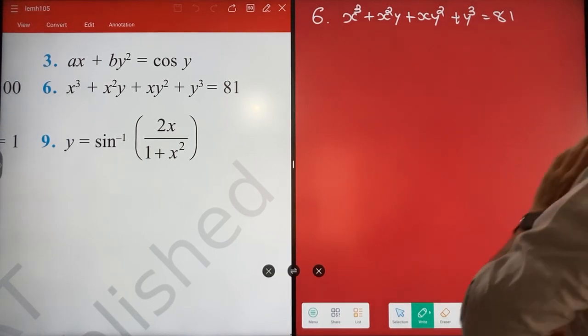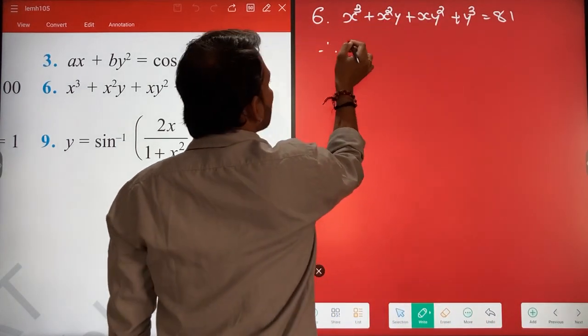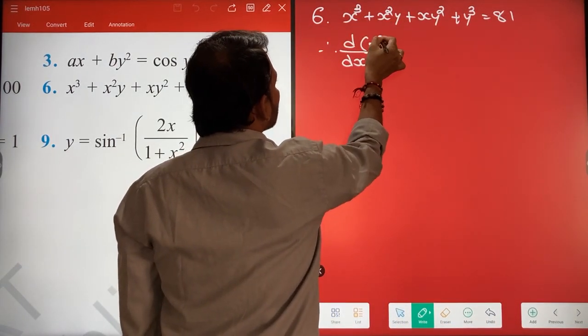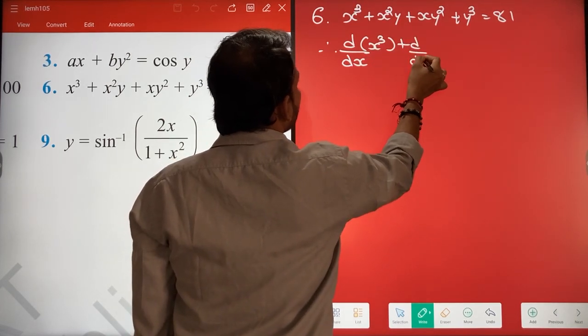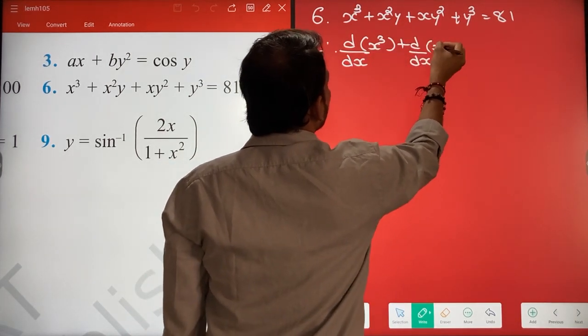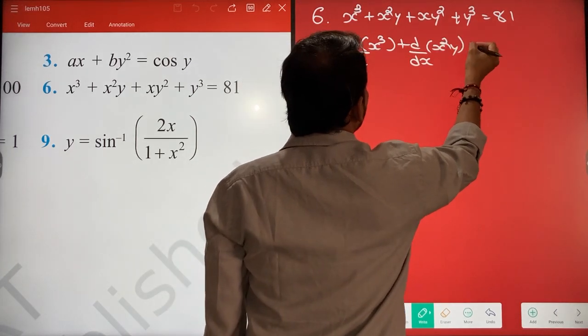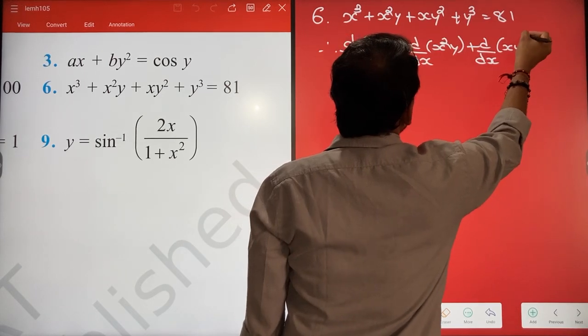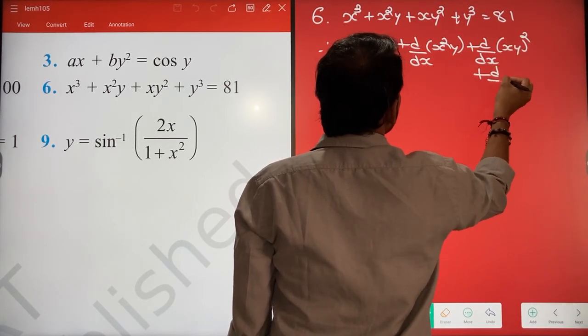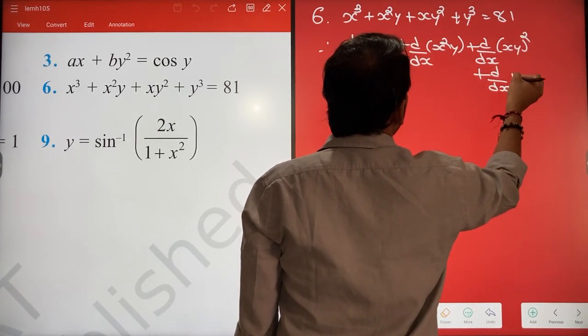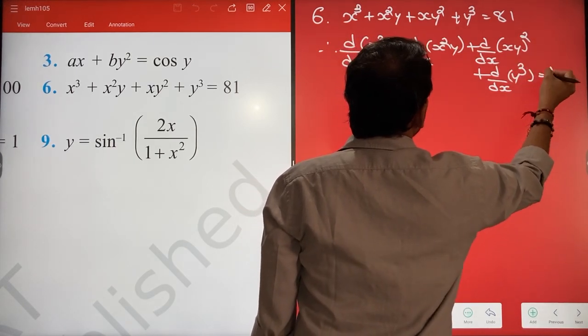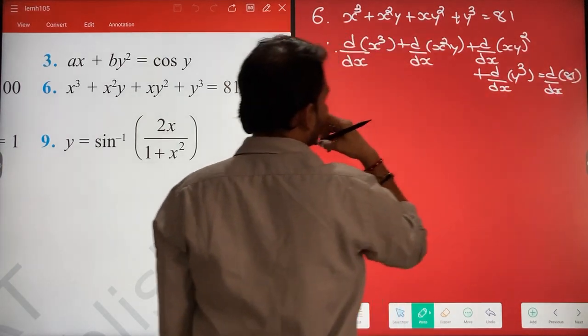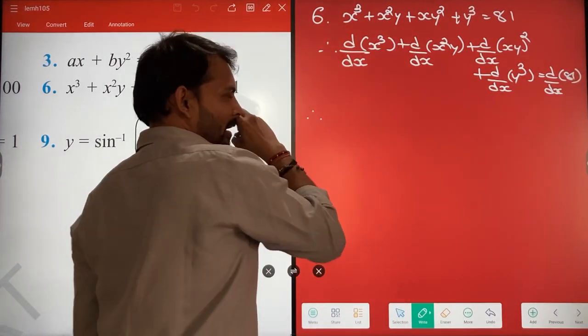Sahi hai na? Chalo toh karte hai. D by dx of X cube plus D by dx of X square Y plus D by dx of XY square plus D by dx of Y cube equals D by dx of 81. Done? Yes, okay.